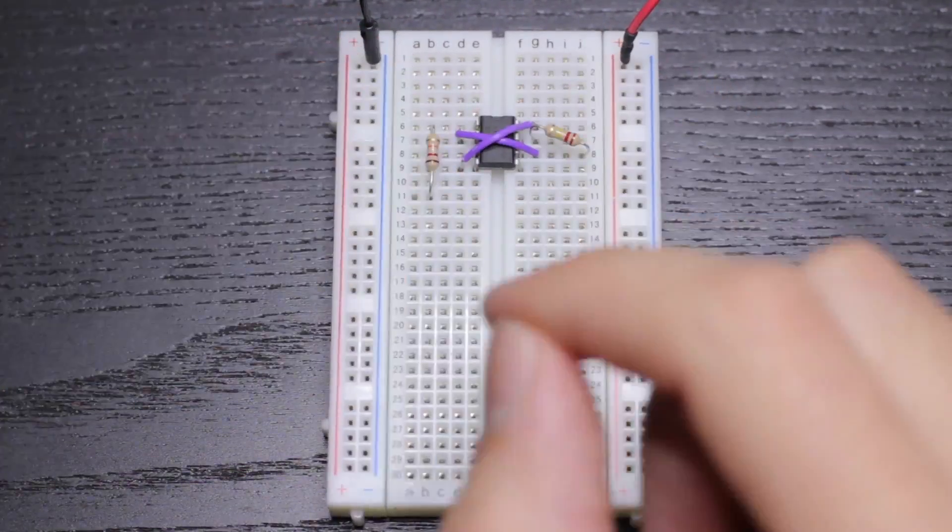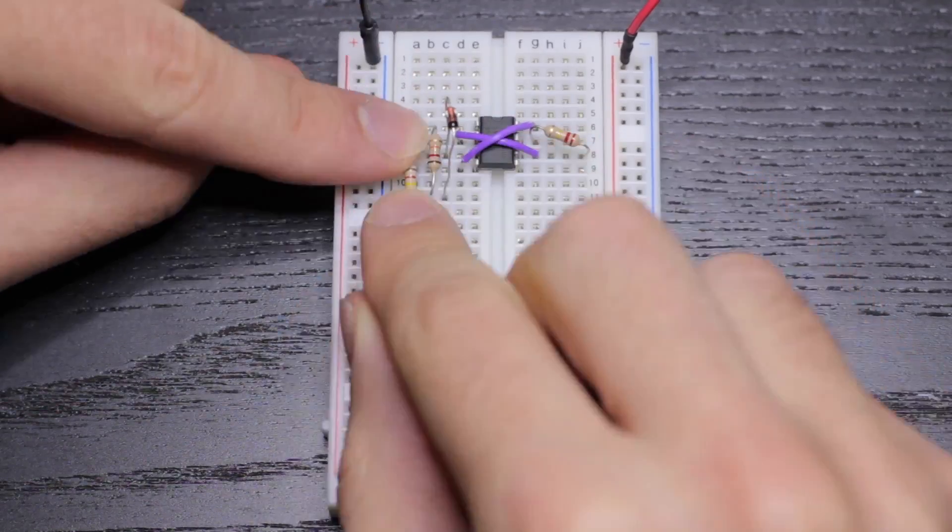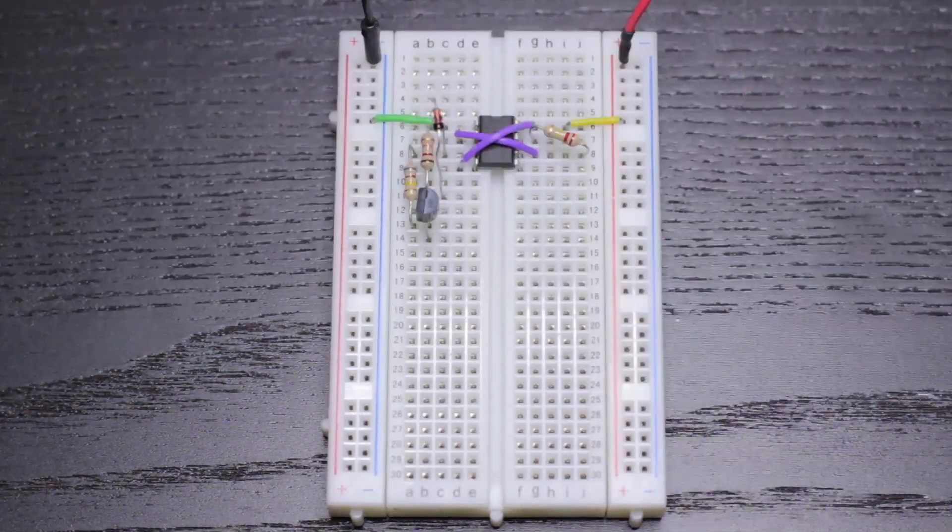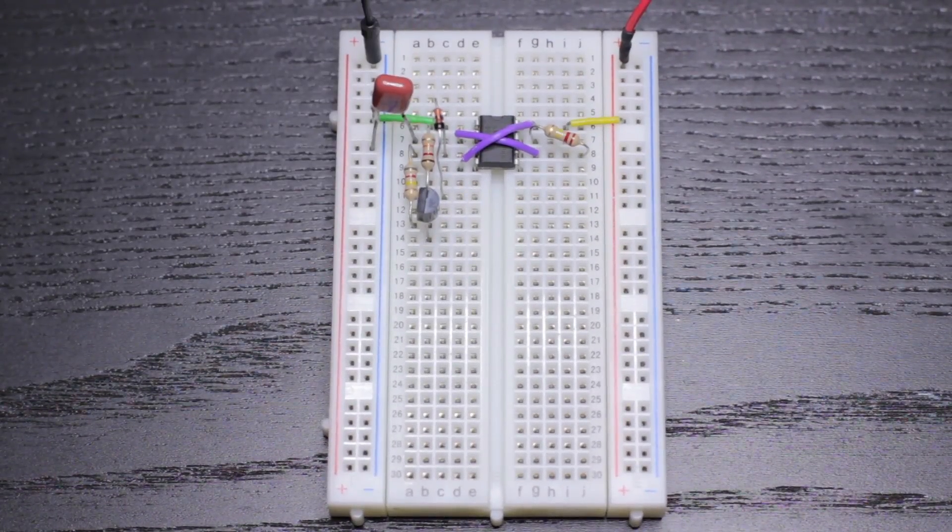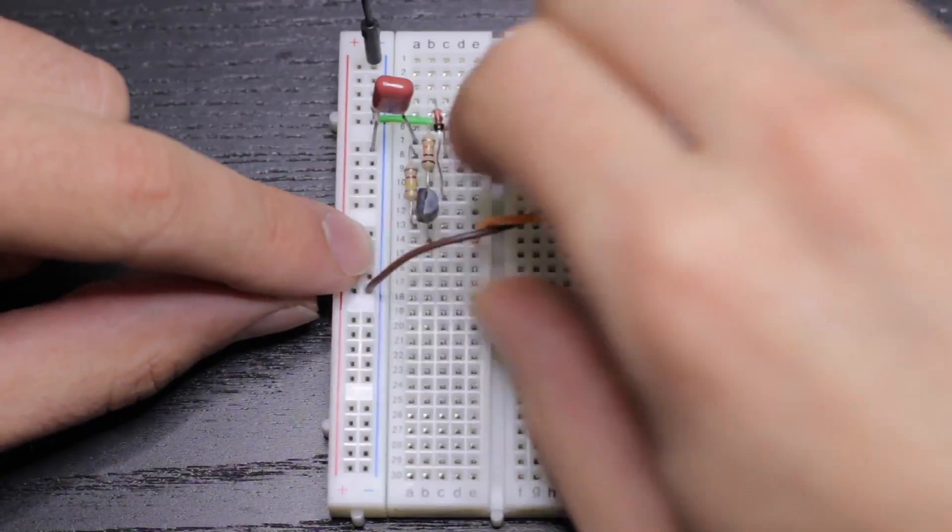The first step is to build our 555 timer chip servo controller. This creates a 1 to 2 millisecond pulse every 20 milliseconds or so.